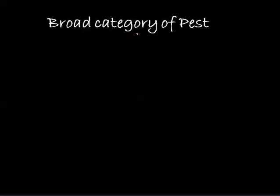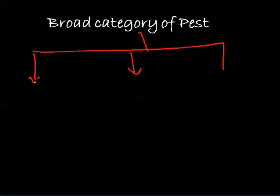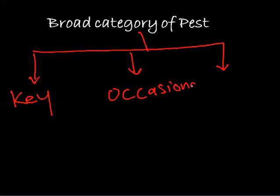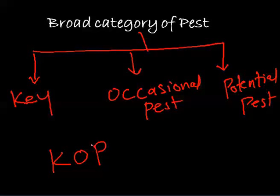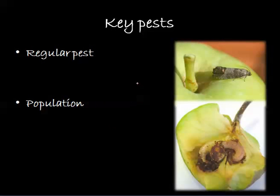We can broadly define pests in three categories — these are the broad divisions so that you can easily remember during exam days. The first category is key pests, the second is occasional pests, and the third is potential pests. So broadly we divide them as K, O, P — key pest, occasional pest, and potential pest. Now we'll take all the categories individually.